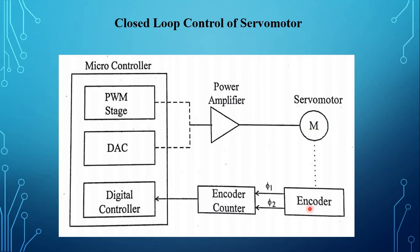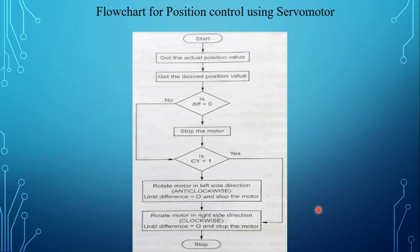A sequential encoder produces quadrature pulse trains from which position, speed, and direction of the motor can be determined. Servo motor is based on servo mechanism and is mainly used for position control. Consider a DC servo motor interfaced with a microcontroller. The actual position of the motor is sensed with the sensor and compared with the desired position. If there is a difference between actual and desired position, the motor rotates either in clockwise or anti-clockwise direction. The position of the rotor is controlled by the controller output.